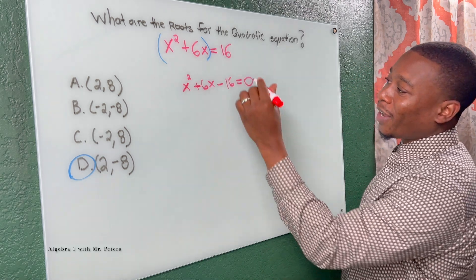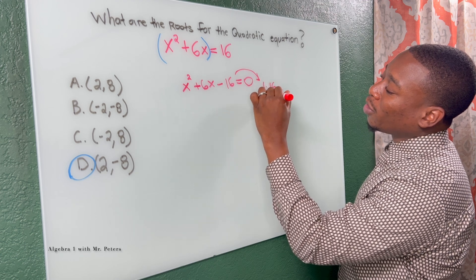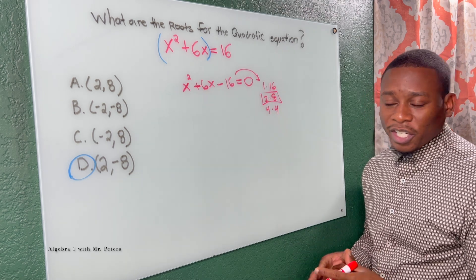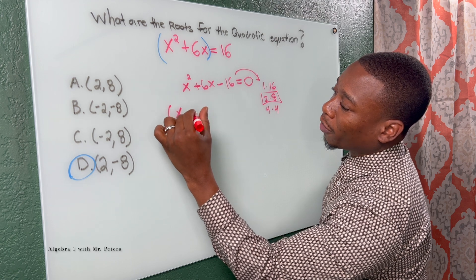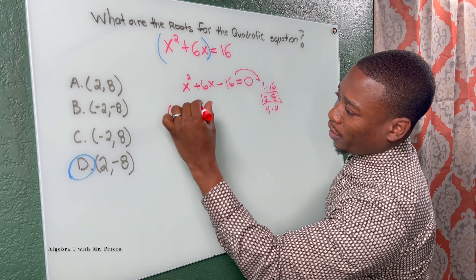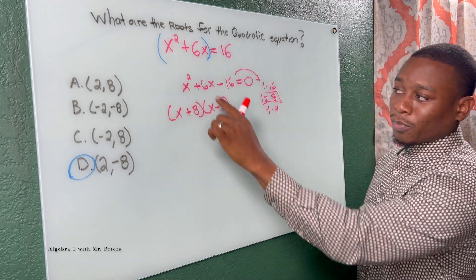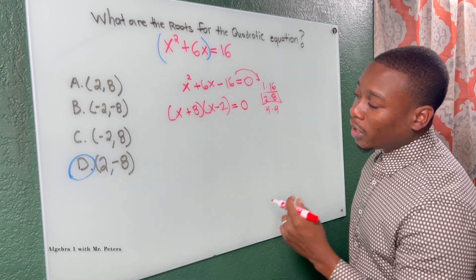Now when we're looking at our factors, one times 16, two times eight, four times four, only that combination could get us a positive six. So now we come in, we have x plus eight times x minus two. That gives us the positive six and it gives us the negative 16 when we multiply.